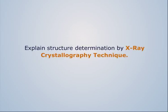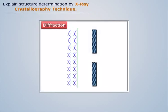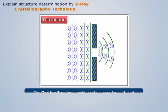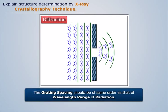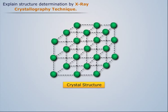Explain structure determination by X-ray crystallography technique. We know that for electromagnetic radiation to be diffracted, the grating spacing should be of the same order as that of the wavelength range of radiation. This principle is used for the study of crystal structure.